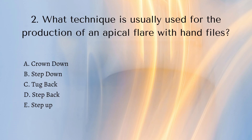Number two: what technique is usually used for the production of an apical flare with hand files? Is it crown down, step down, tug back, step back, or step up? The answer is D — step back. It's really useful to know the other terms around it as well. Crown down is how you would produce the apical flare if you're doing it with rotary instruments, but step back is what we're doing if it's specifically hand files. Tug back is another term we hear quite often, associated with GP, making sure that's at the correct length and in the correct position.